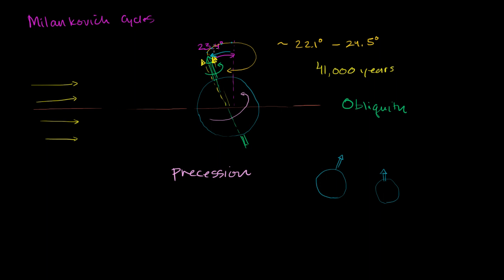This is a little bit hard to visualize, and hopefully as I draw different diagrams it'll become clearer. Just as it takes a long time for the obliquity to change from a minimum to a maximum value and back, it takes a huge amount of time for Earth's precession to change significantly. For this arrow to actually trace out an entire loop, it takes 26,000 years — 26,000 years for one complete cycle of precession.